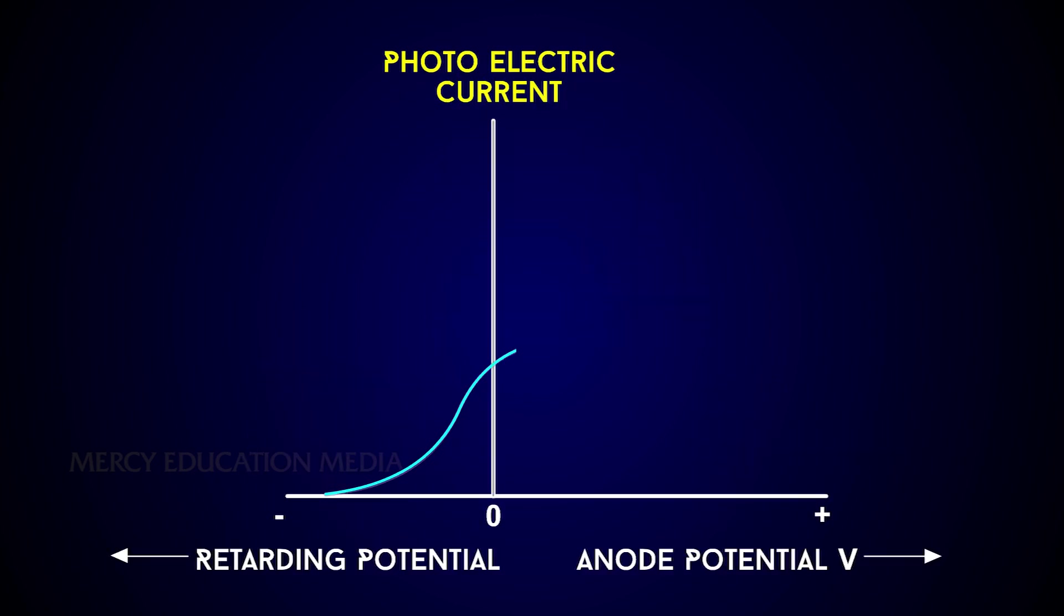The figure shows the variation of photoelectric current with the potential difference V between the two plates. When the positive potential of A is increased, the photoelectric current is also increased.